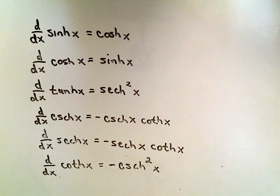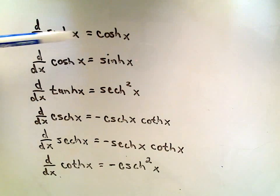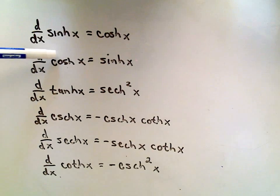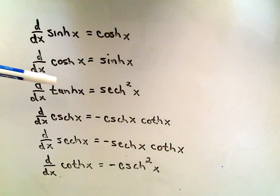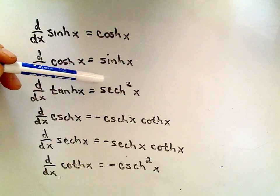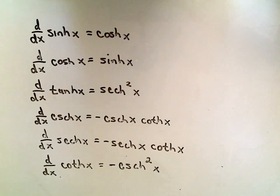It turns out that the derivative formulas are as follows. The derivative of hyperbolic sine is hyperbolic cosine. The derivative of hyperbolic cosine is hyperbolic sine. The derivative of hyperbolic tangent is hyperbolic secant squared, and so on for the others.